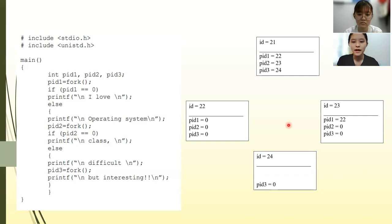At ID equals to 24, PID3 equals to 0. PID1 will take back its integer value, which is 22, and with PID2, which returns an integer value of 23.